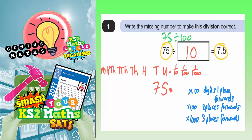It would look something like this in this example. So 75 times 10: the 7 would move one place forward into the hundreds column, the 5 would move one place forward into the tens column. Then obviously we've got our decimal point — the decimal point doesn't move — so this big gap here we'd have to fill in with a 0. If we were multiplying 75 by 100, we'd need to move an extra place forwards, so the 7 would be in the thousands column, the 5 would be in the hundreds, with a 0 here, and then we need another 0 to fill in the gap there.